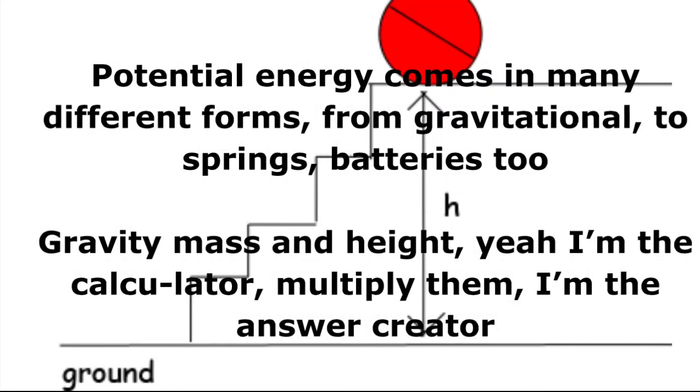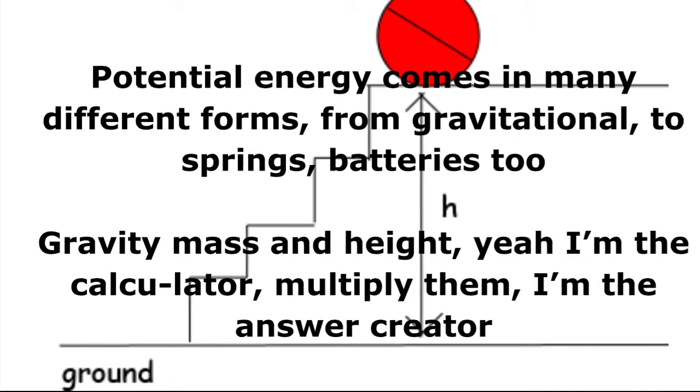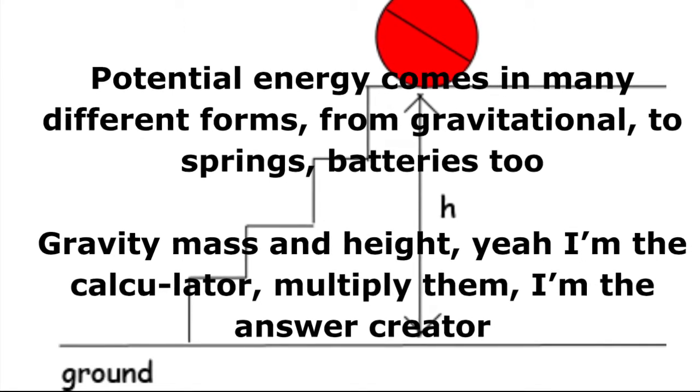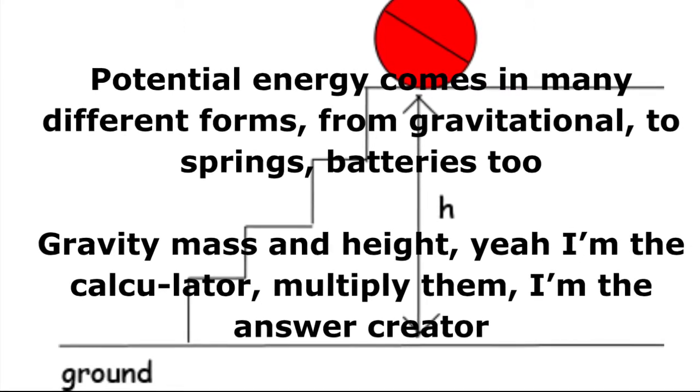Potential energy comes in many different forms. From gravitational to springs, batteries too. Gravity, mass, and height, yeah. Multiply them, that's the answer.